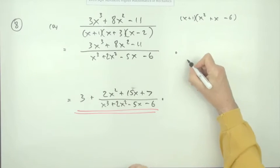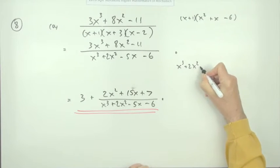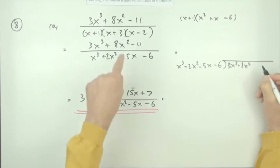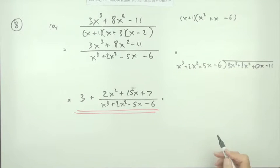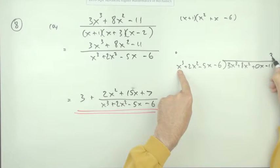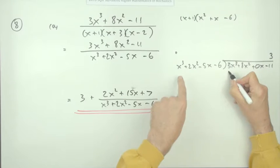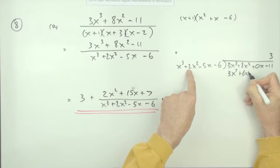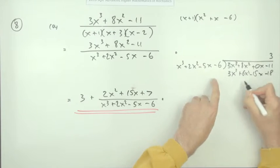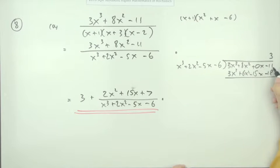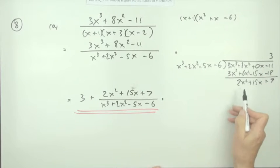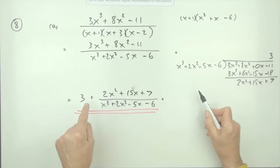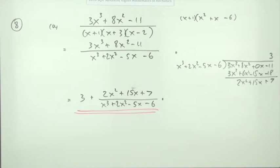Then you'd have put this at the side, dividing that into that. You'd have had x cubed plus 2x squared minus 5x minus 6 into 3x cubed plus 8x squared, zero column, no x, minus 11. Then it's how many of them to make that? That would be 3. Put it in the appropriate column, multiply it out just to see what you've got: 3x cubed plus 6x squared minus 15x minus 18. Subtract it to find the remainder. Negative 11 plus 18 is plus 7, plus 15 is 15x, and 8 take away 6 is 2x squared. Then that gives you—it goes in 3 times with this left over, still to be divided by the original. That would have been the second mark if you set it out as a division.